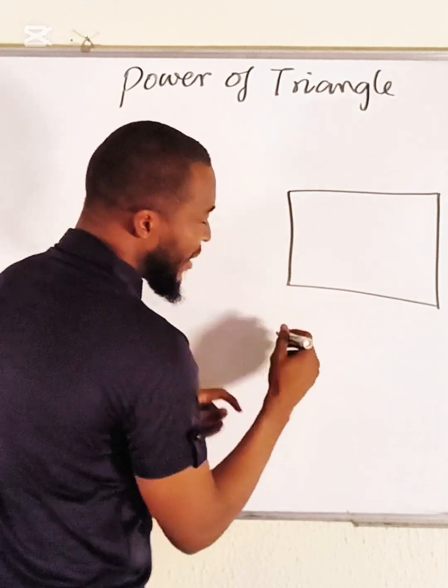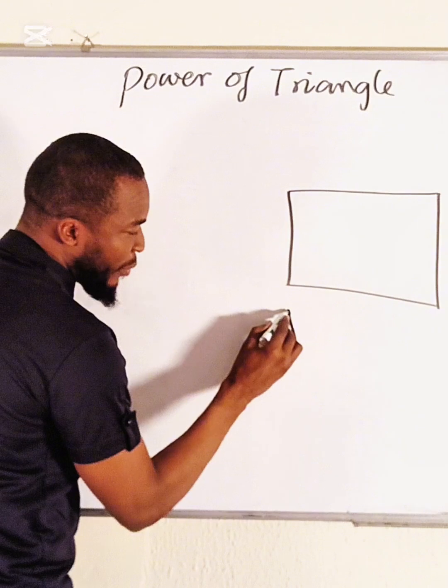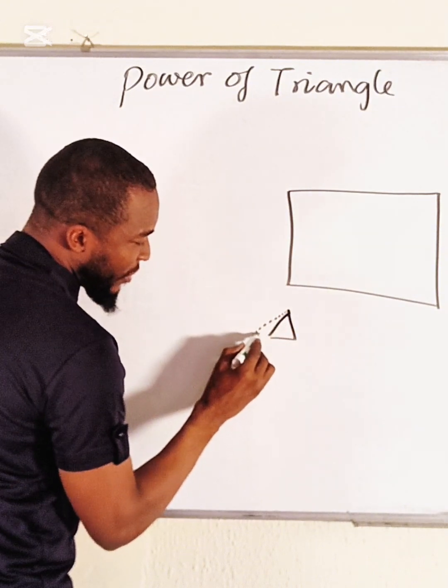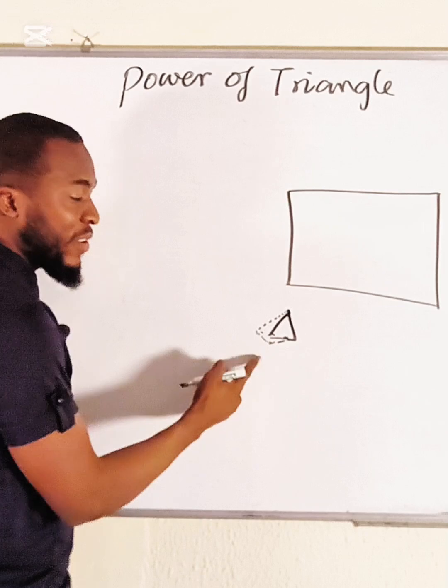For instance, if you have blocks that are in the form of this, rectangular prism, it will be something like this, right? Assuming this is a block.